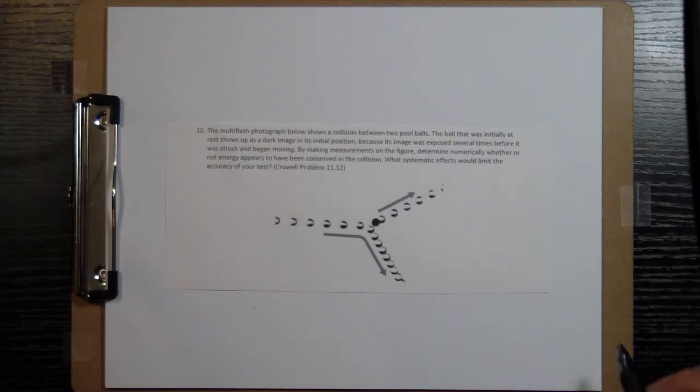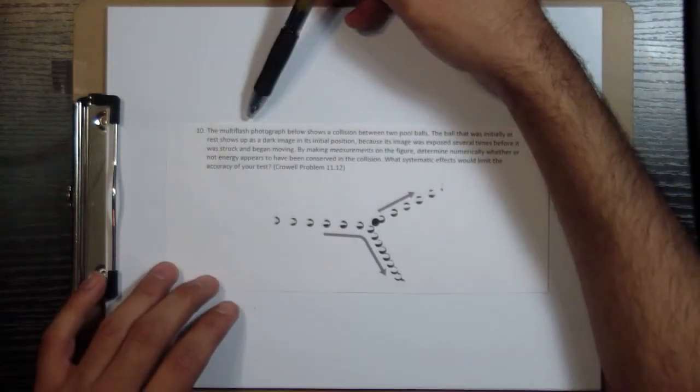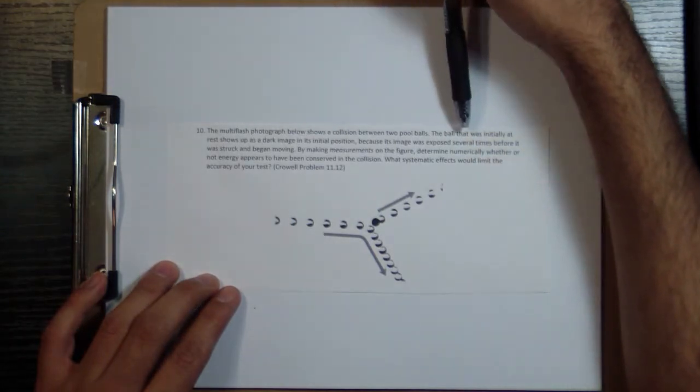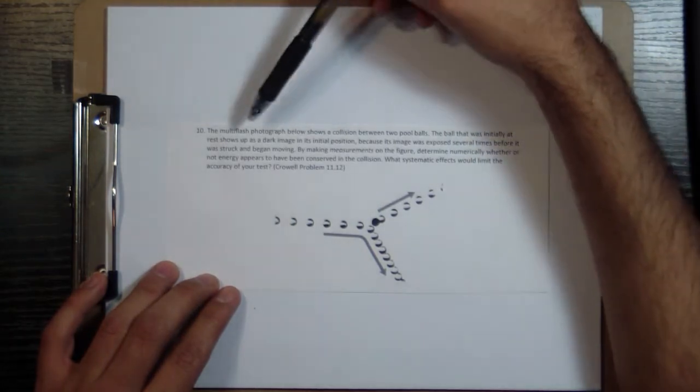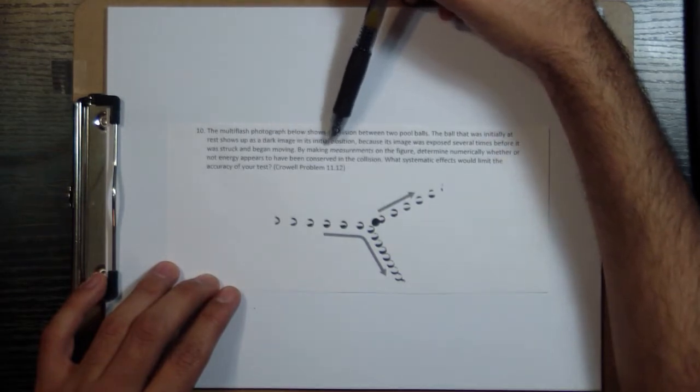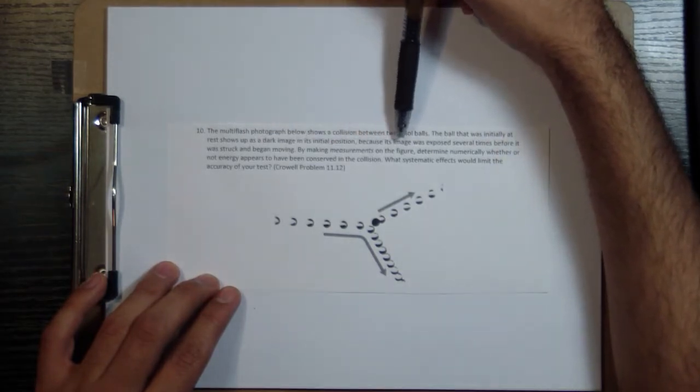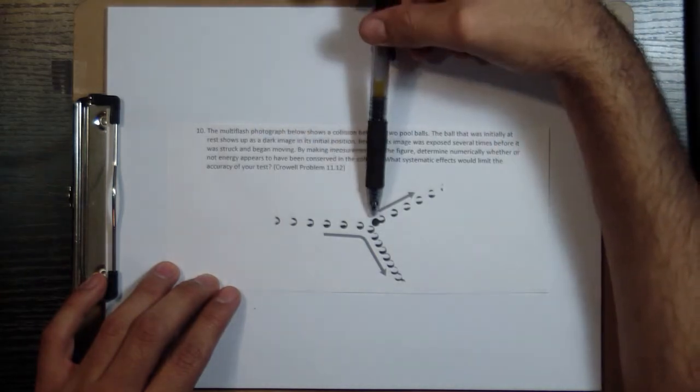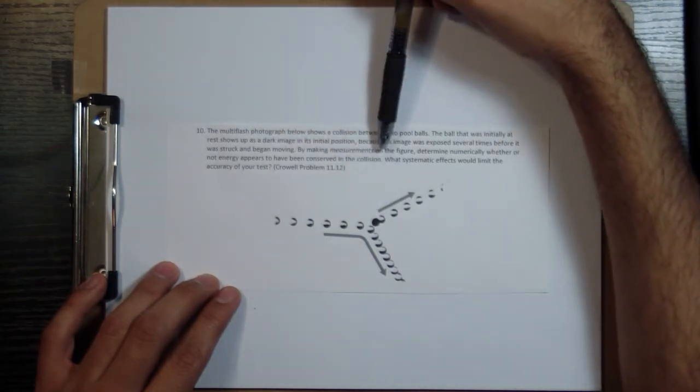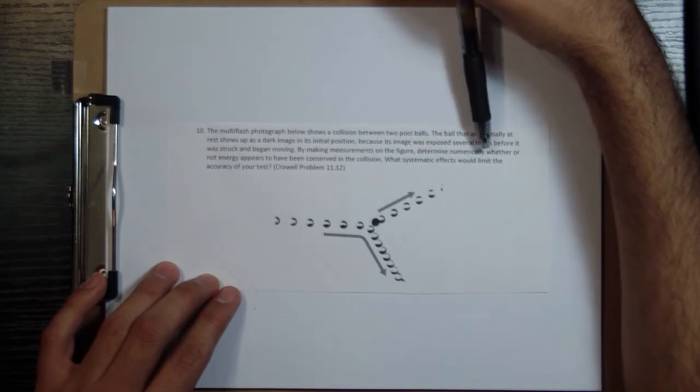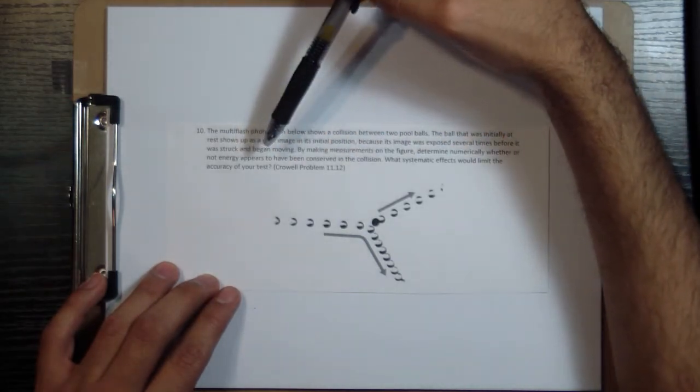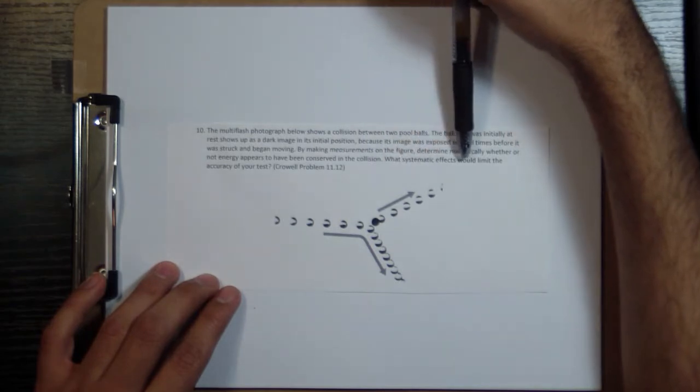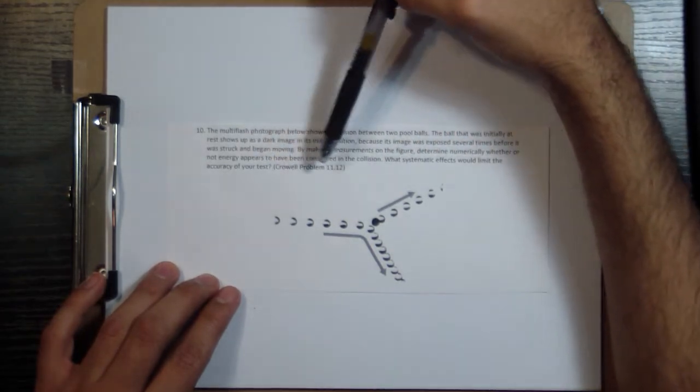Alright, let's look at problem number 10. This one says, the multi-flash photograph below shows a collision between two pool balls. The ball that was initially at rest shows up as a dark image in its initial position because its image was exposed several times before it was struck and began moving. By making measurements on the figure, determine numerically whether or not energy appears to have been conserved in the collision. What systematic effects would limit the accuracy of your test?